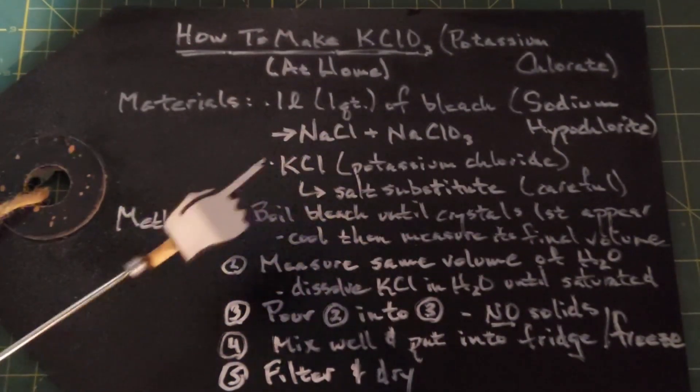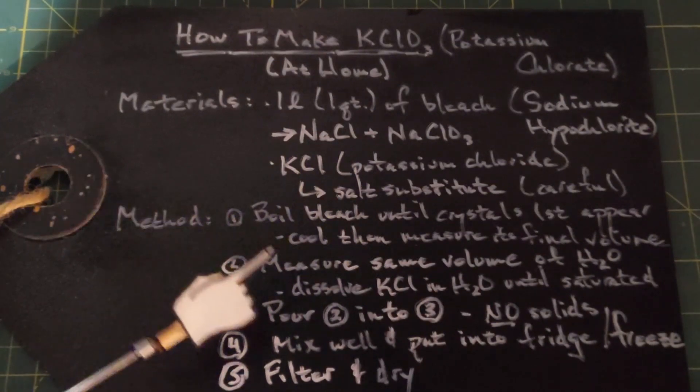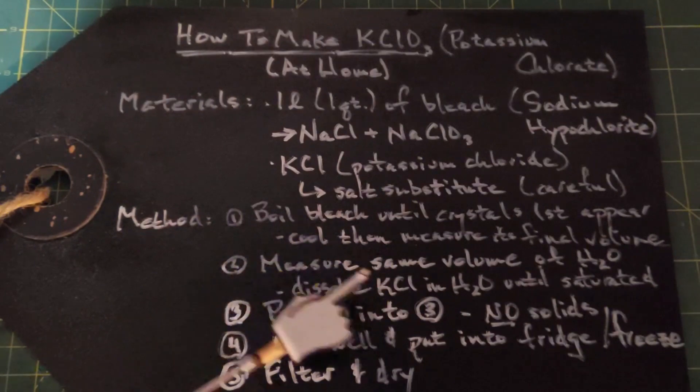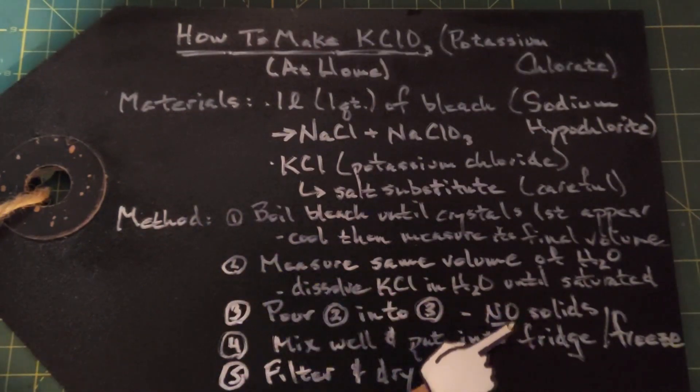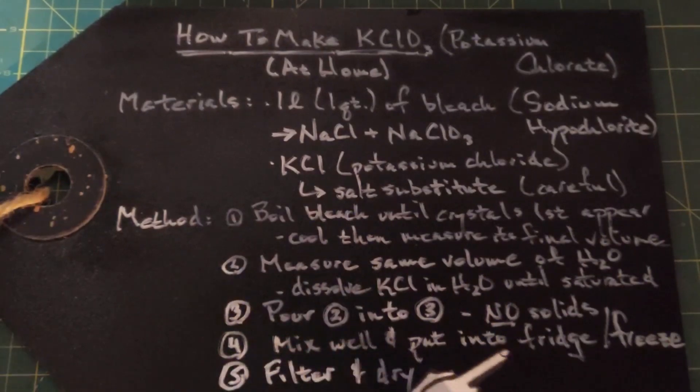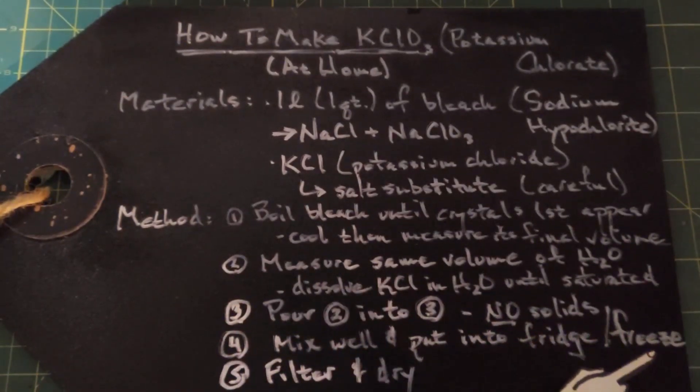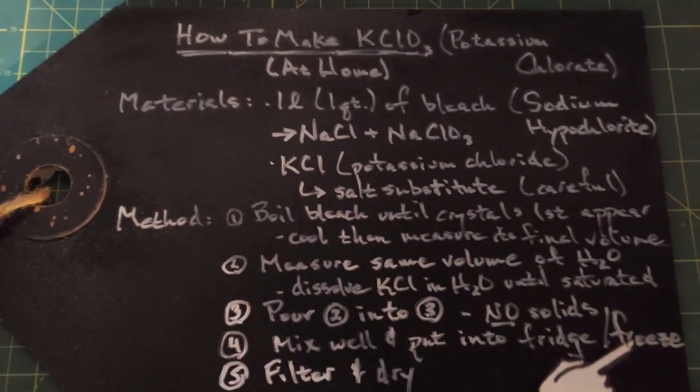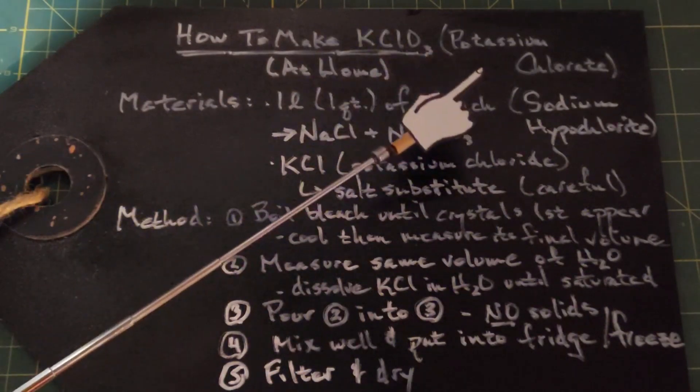The next step is really simple. Take the potassium chloride solution and pour it into the bleach. You want to make sure you don't get any potassium chloride that didn't dissolve in the water into this. Once you're done mixing it well, put it into the fridge or the freezer. The freezer will act quicker obviously, so just keep an eye on it. You'll see crystals form really clearly, and those are your potassium chlorate crystals.